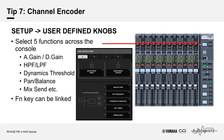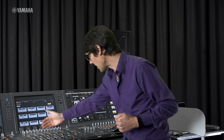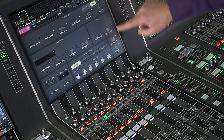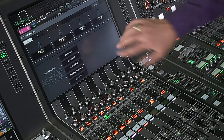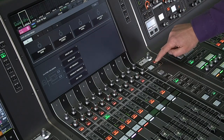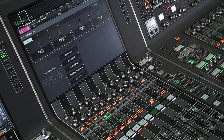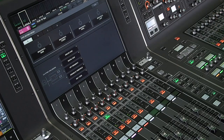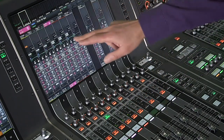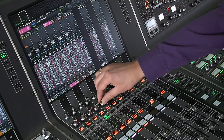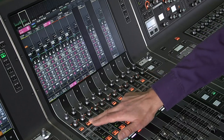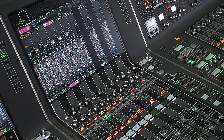Tip number seven: channel encoder — the row above the faders. You have five choices mapped with the buttons: analog or digital gain, high-pass filter, thresholds for dynamics, mix sends, surround pans. For example, choosing high-pass filter, you can see adjusting these encoders in real time. The function key can be linked with the encoder so you can switch high-pass filters on and off quickly and easily.